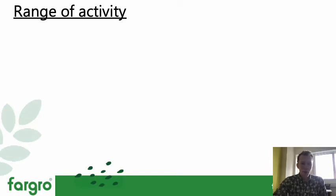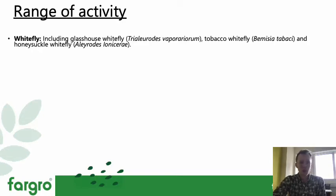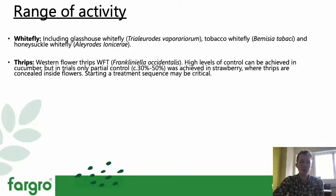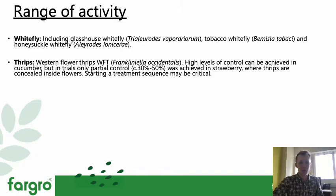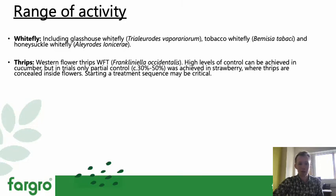Beauveria bassiana has quite a wide range of activity. It has good efficacy on whitefly and thrips — both are on the UK label. It works effectively on Trialeurodes, so glasshouse whitefly, as well as Bemisia, and also the honeysuckle whitefly. For thrips, there's quite a range of species it controls, including western flower thrips. What's important to keep in mind is if you've got thrips that are particularly cryptic — hiding in flower heads — it's going to be more difficult to get control. It's important to use Naturalis effectively at the right time when you've got low population pressures. If you've got higher population pressures and the pest is cryptic, it might be worth looking at something with some systemic action to get to those cryptic positions.